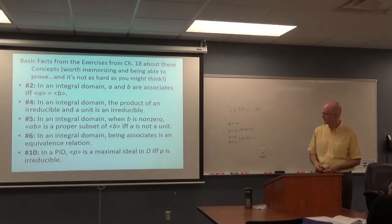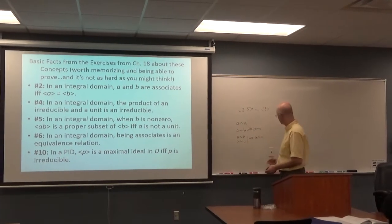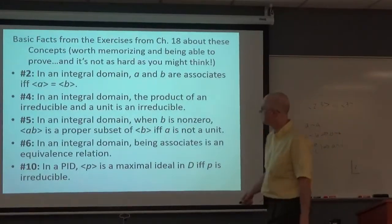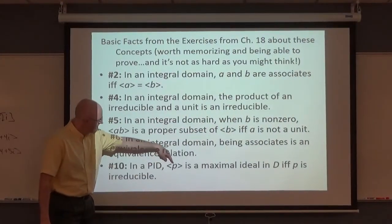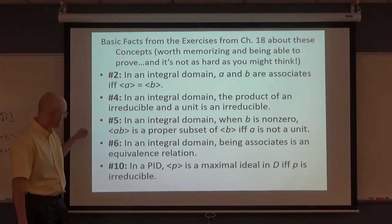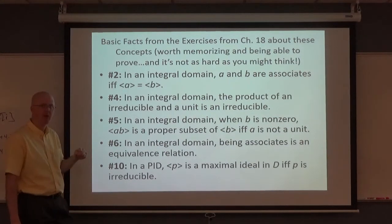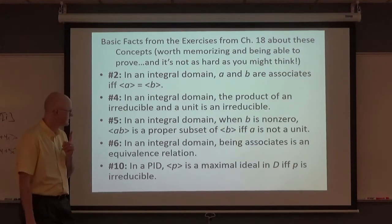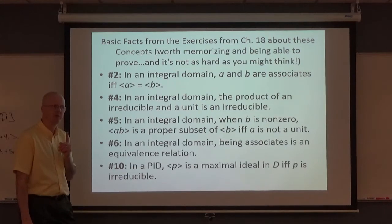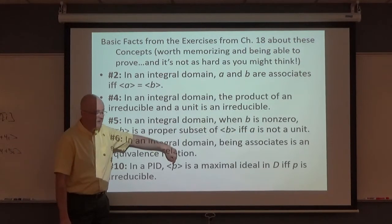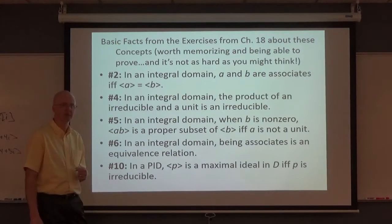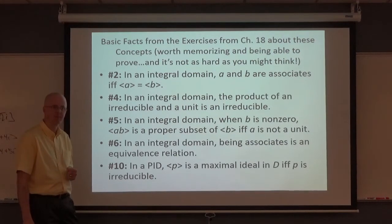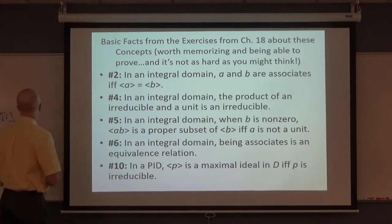This last fact is trickier. In a principal ideal domain, you're going to have a maximal ideal generated by an element if and only if that element is irreducible. This came up in chapter 17 as well, in the context of polynomial rings: the principal ideal generated by a polynomial was maximal if and only if it was an irreducible polynomial — over the integral domain over the field.